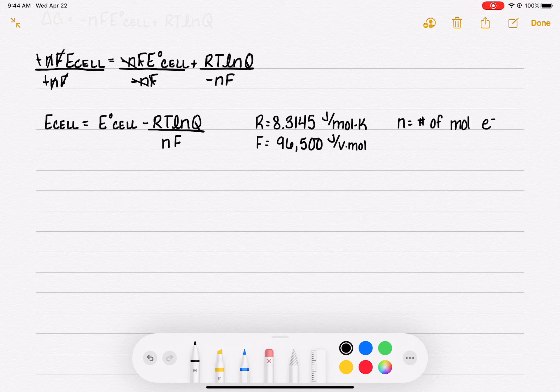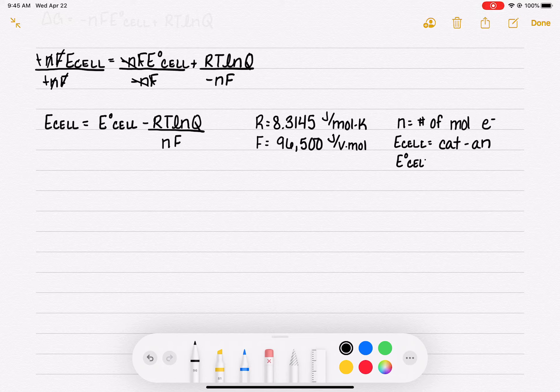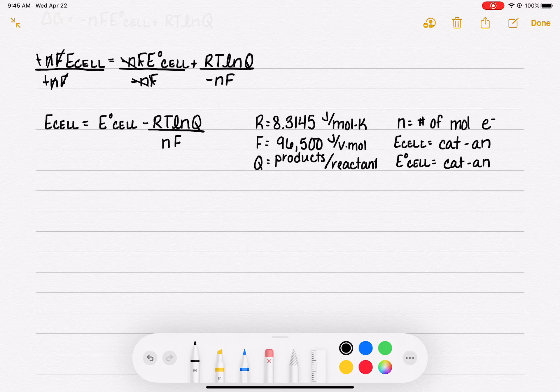What else do we have in here? We have Ecell, which is cathode minus anode. We're going to calculate it the same way if it's standard or non-standard. It's going to be cathode minus anode no matter what. And we also have Q, products over reactants. So those are all of our terms. Some of these things are just straight up constants like R and F, no matter what.